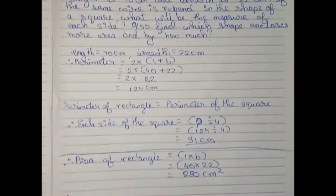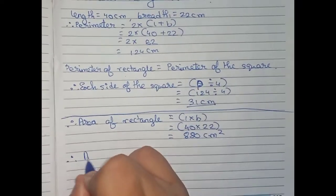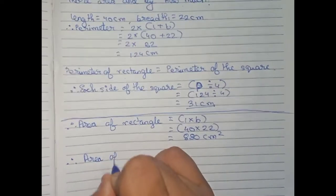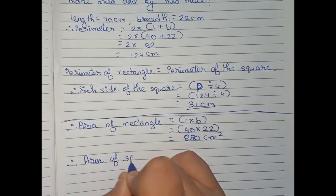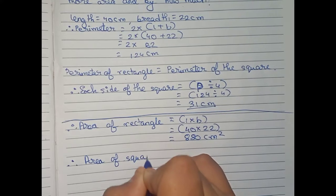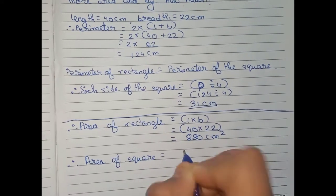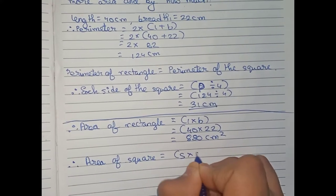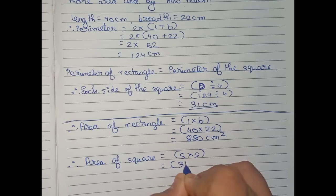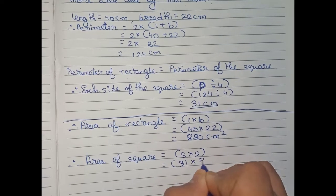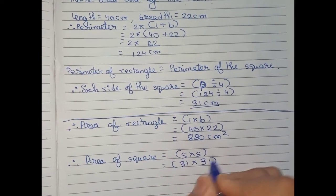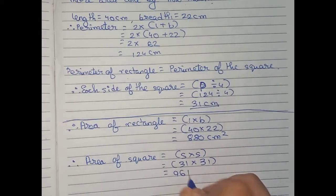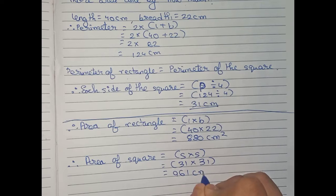Now we find the area of the square. Its formula is side into side, which becomes 31 into 31, which is 961 centimeter square.